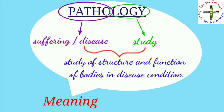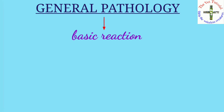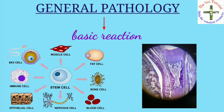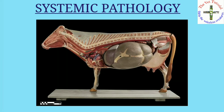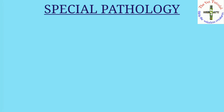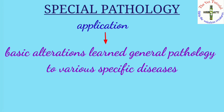In general pathology, we are concerned about the basic reaction of cells and tissues to injurious stimuli. In systemic pathology, it is the application of general pathology in a particular system-wise manner. In special pathology, it is the application of basic alterations learned in general pathology to various specific diseases.